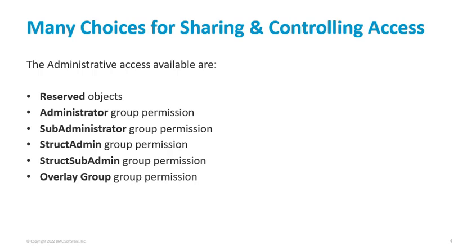The Administrator Group Permission allows users to have full access to all Remedy objects. Since they have full access, apply good judgment about how many or who you assign such access to. The Sub-Administrator Group Permission will allow users to have the same access, but to selected objects and applications only. The Struct Admin Group allows users only to have access to structures, so they can customize the application, but they don't have access to the underlying data or are able to perform administrative tasks.